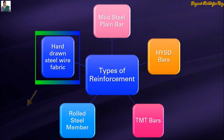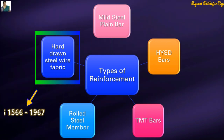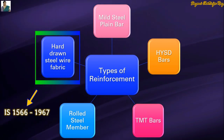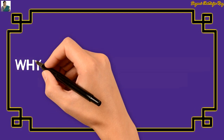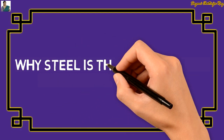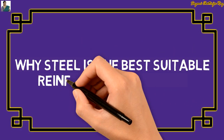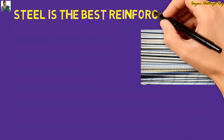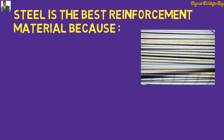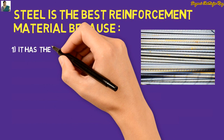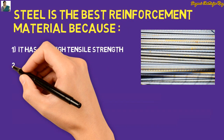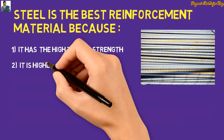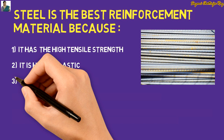Now we will understand why steel is the best suitable reinforcing material in RCC structures. Steel is the best reinforcement material because it fulfills almost all the characteristics required for a reinforcing material. It has very high tensile strength and is highly elastic in nature.